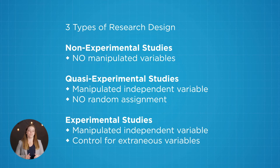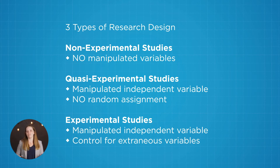The second type of design is called a quasi-experimental design. It still has a manipulated independent variable, but we don't have random assignment — that kind of level of control that we have with experimental designs.